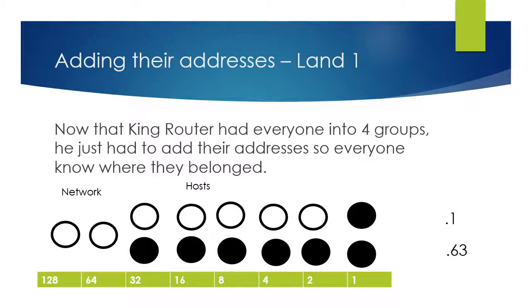Now that King Router had everyone split up into four groups, he just had to add their addresses so everyone knew where they belonged. The protectors make up our network — in this case we have 0 and 0. Those are our protectors; these are our villagers — network and hosts.